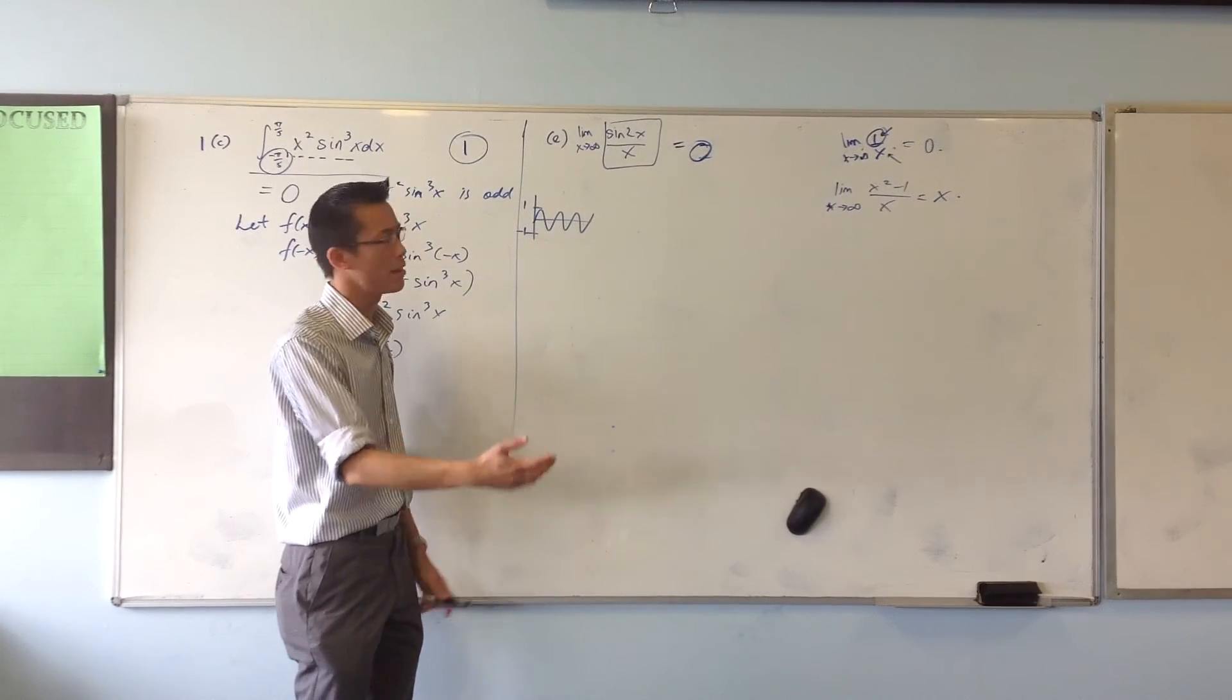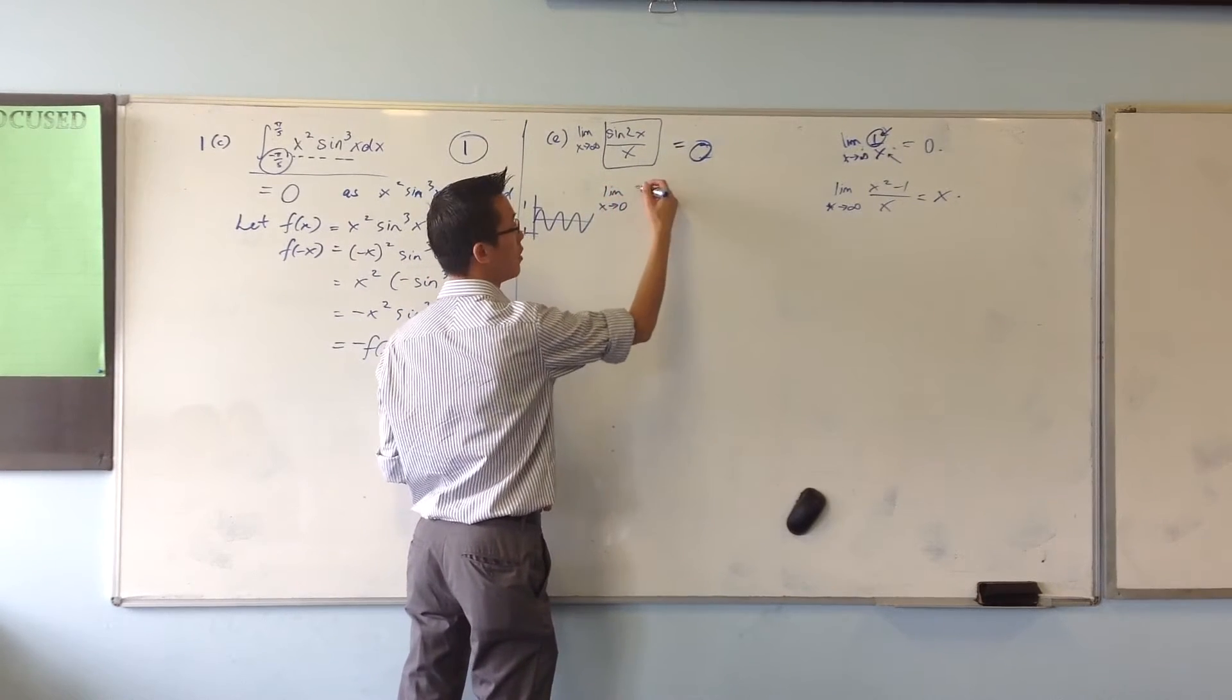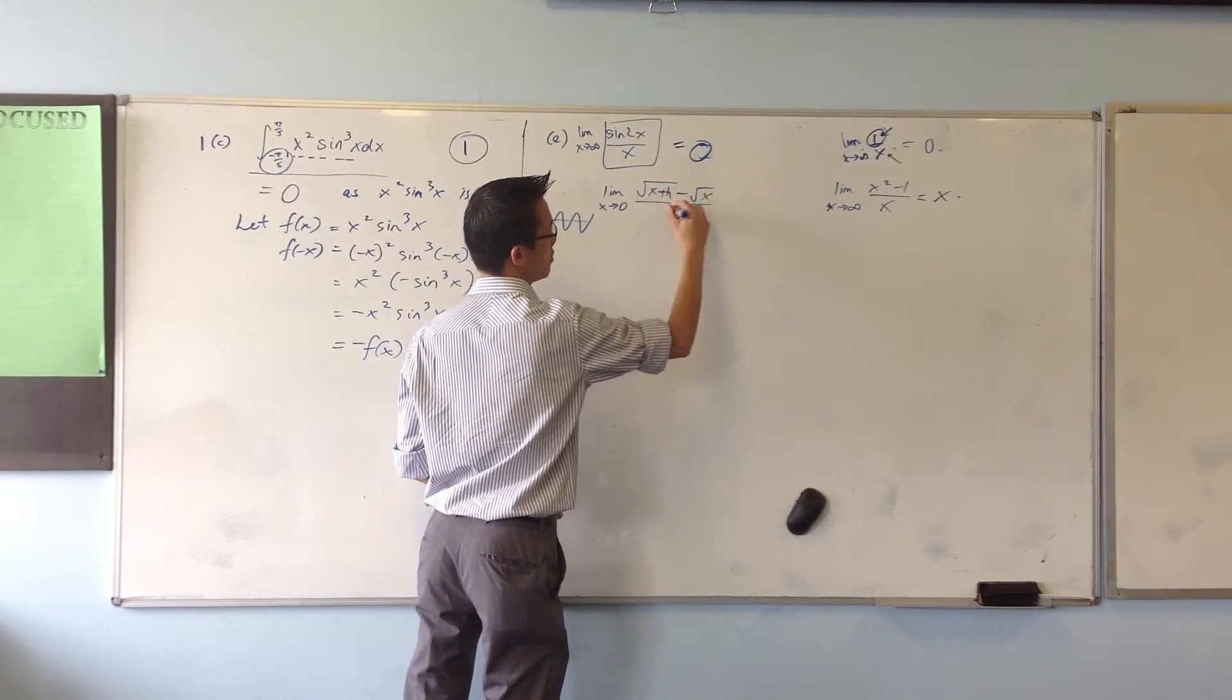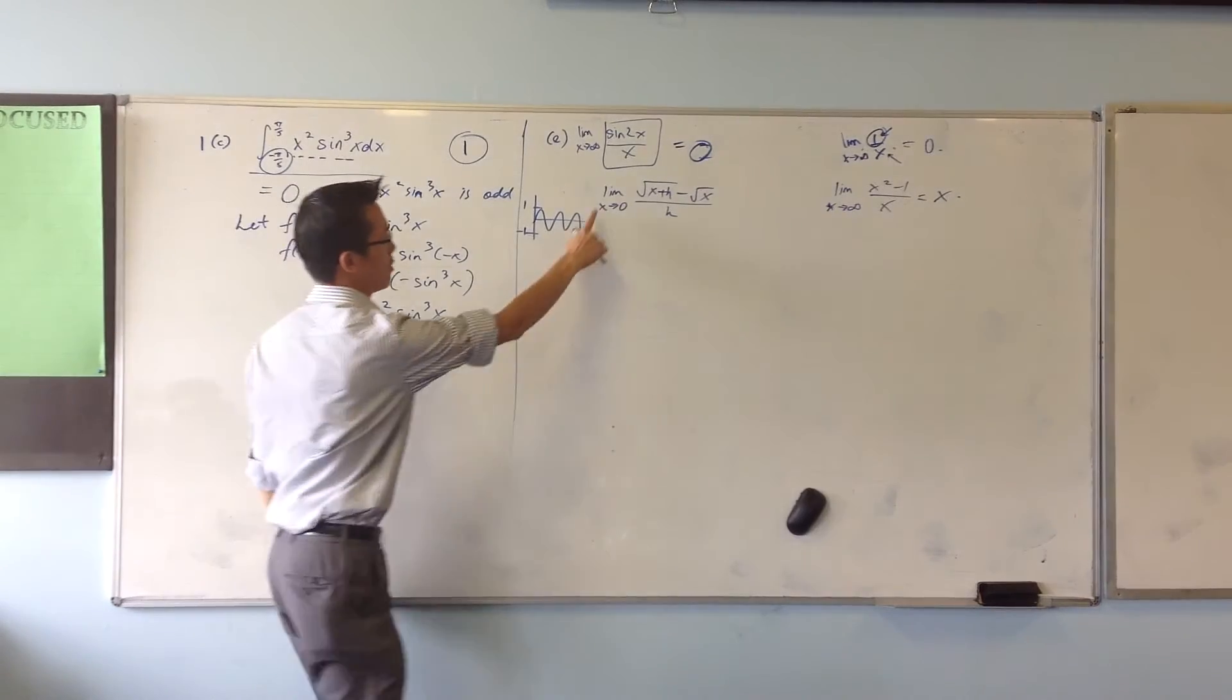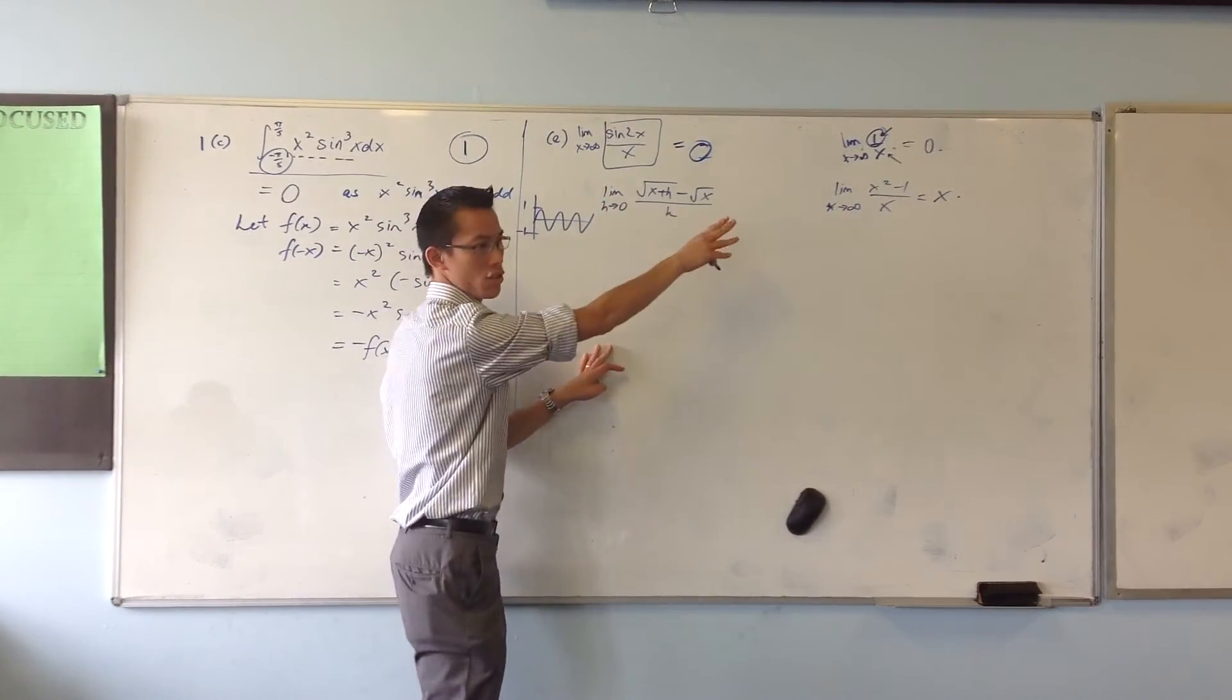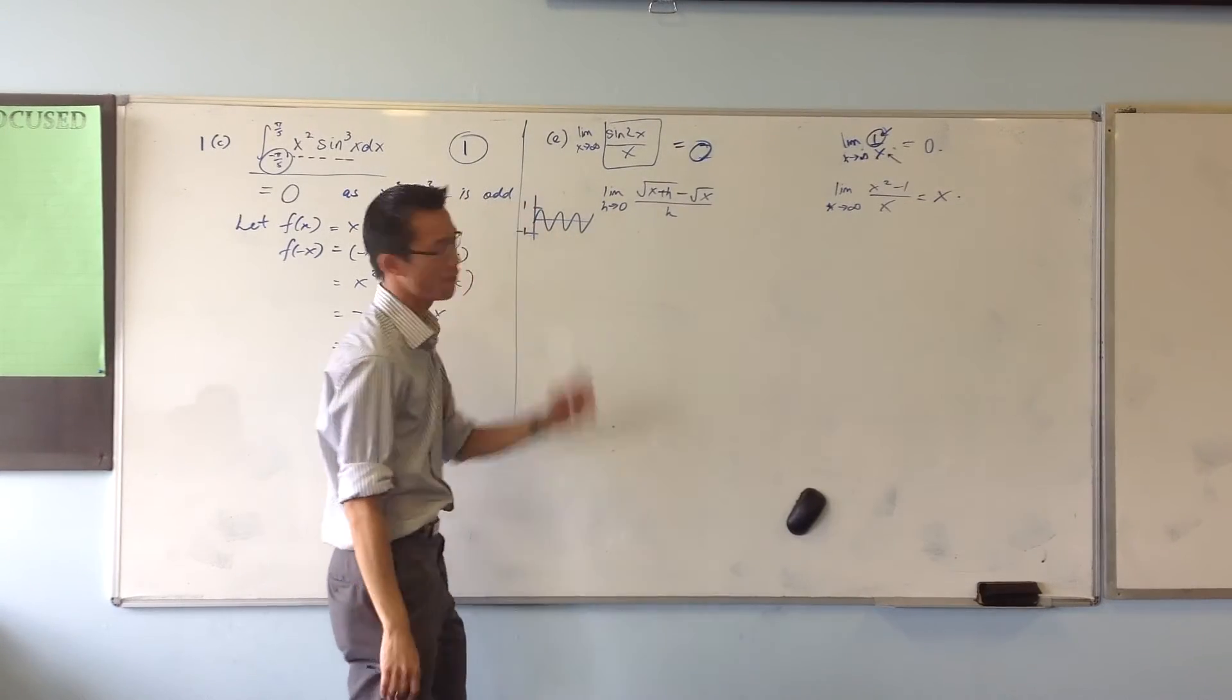As opposed to zero, like when we did first principles, for instance. This is how you differentiate the square root of x by first principles. In this case, h has a meaning. Once you rationalize the numerator, I am actually going to sub zero in because zero is a number. Infinity, you can't do it.